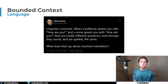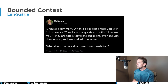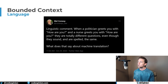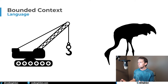One of the great ways to find boundaries within your system and to define what a bounded context is, is through language. I love this tweet by Mel Conway — even though that's not what he was talking about — from October 29, 2020, where he said: when a politician greets you with 'how are you?' and a nurse greets you with 'how are you?', they are totally different questions even though they sound and are spelled the same. What this describes is context. If I use the word 'crane' without context, are you thinking about a construction crane or a bird? Without any context, you have no idea what I'm referring to.